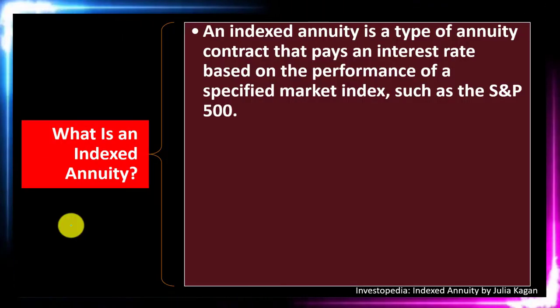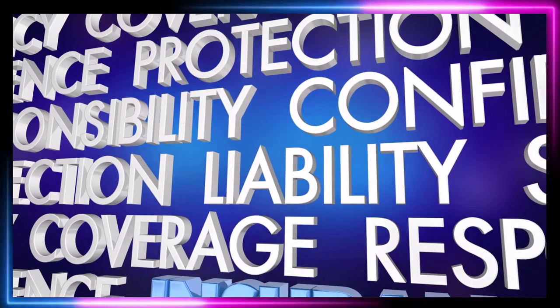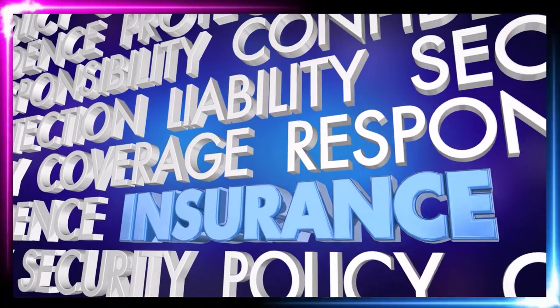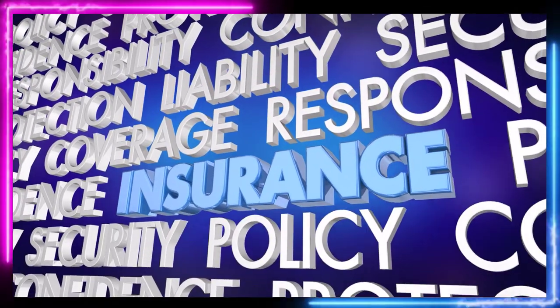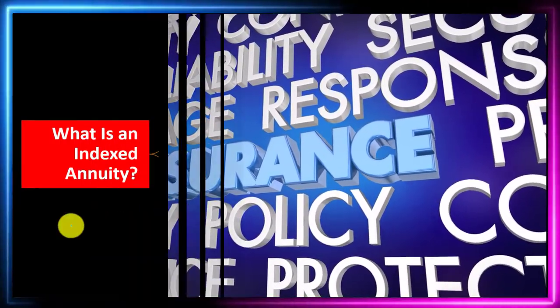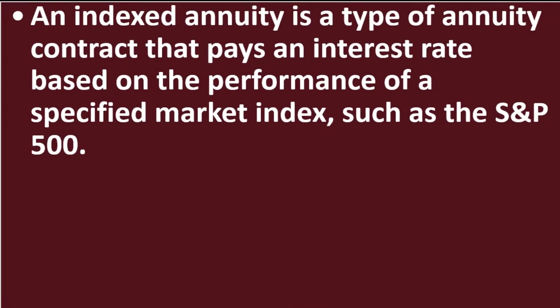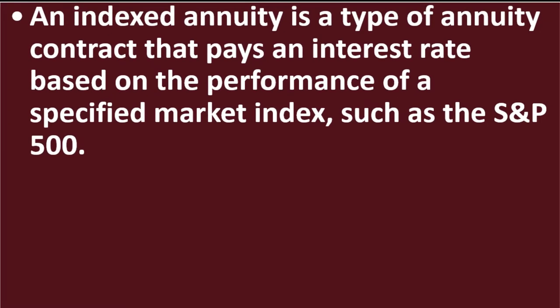In prior presentations, we looked at insurance in general, then moved to life insurance. Now we're talking about different kinds of annuities. In that context, we're asking the question: what is an indexed annuity? An indexed annuity is a type of annuity contract that pays an interest rate based on the performance of a specified market index, such as the S&P 500.